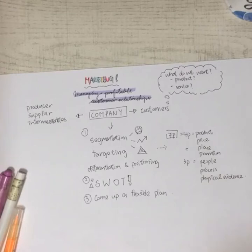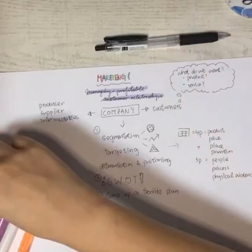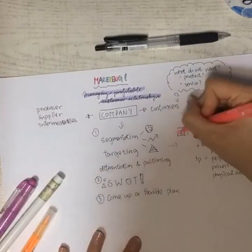What are the 7P? It is the product, the price, the promotion, the place, people, process, and physical evidence.